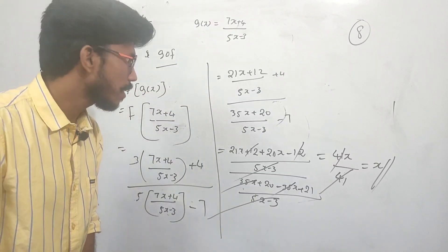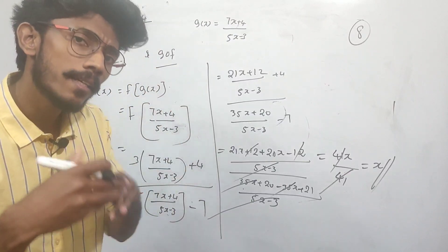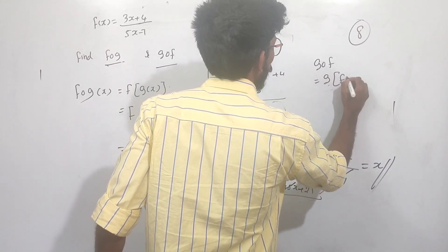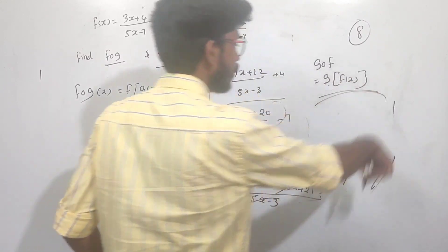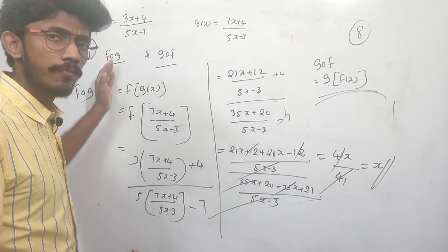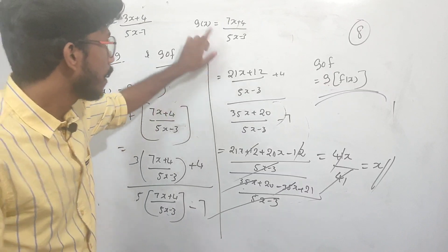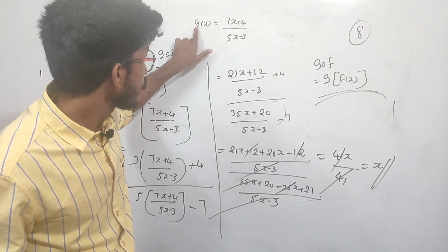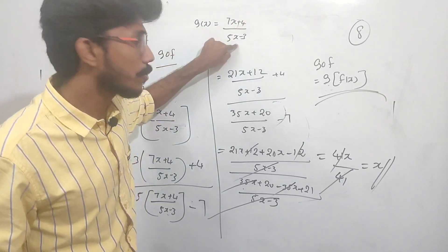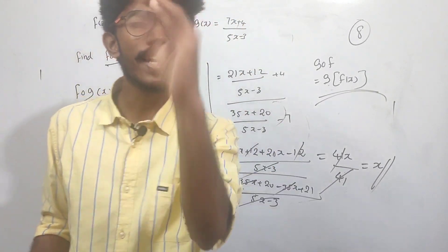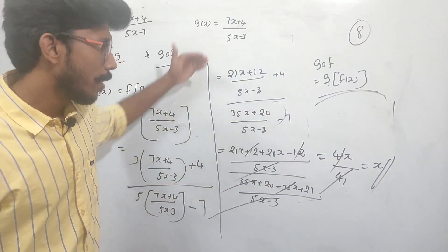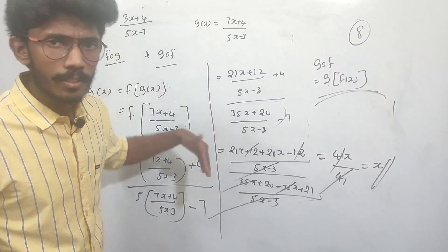Now compute g∘f similarly. g of f of x is computed by substituting f into g, multiplying by 4, dividing by 5, and simplifying. If you don't know the composition function, you can write it step by step.